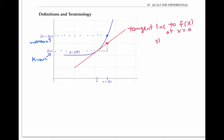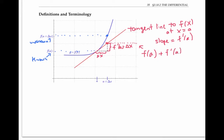Since the tangent line has slope f prime of a, the rise over run is f prime of a. So if the run is delta x, the rise has to be f prime of a times delta x. So the height of the tangent line at a plus delta x is going to be f of a plus f prime of a times delta x — that's just the height here plus the extra height. Since we're using that height to approximate our function, we say that f of a plus delta x is approximately equal to f of a plus f prime of a times delta x.